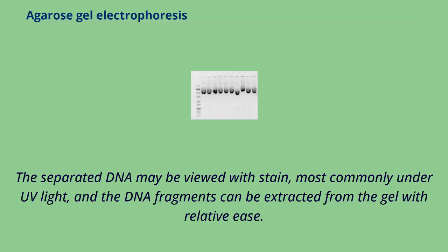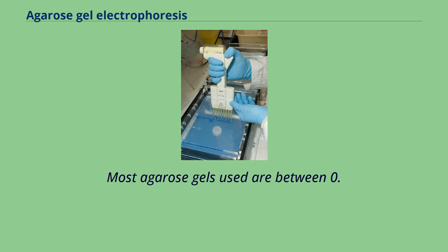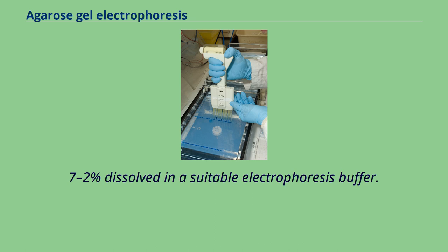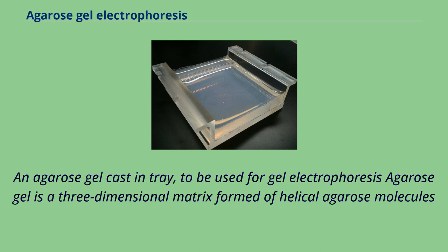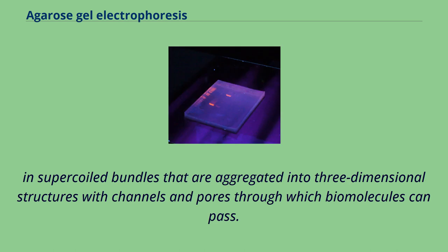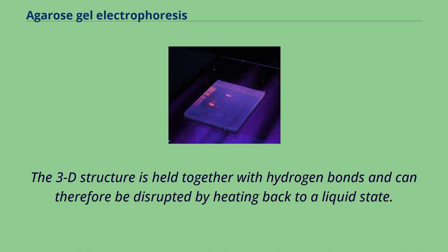The separated DNA may be viewed with stain, most commonly under UV light, and DNA fragments can be extracted from the gel with relative ease. Most agarose gels used are between 0.7–2% dissolved in a suitable electrophoresis buffer. Agarose gel is a three-dimensional matrix formed of helical agarose molecules in supercoiled bundles aggregated into three-dimensional structures with channels and pores through which biomolecules can pass. The 3D structure is held together with hydrogen bonds and can be disrupted by heating back to a liquid state.